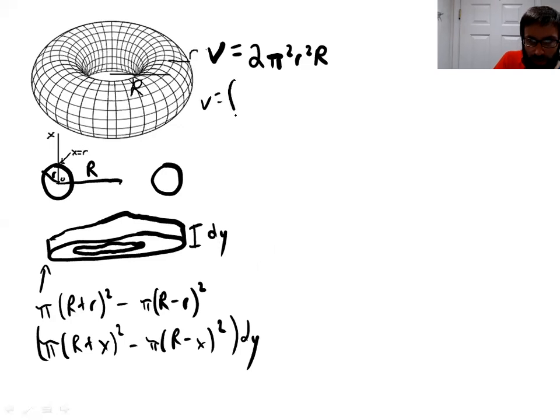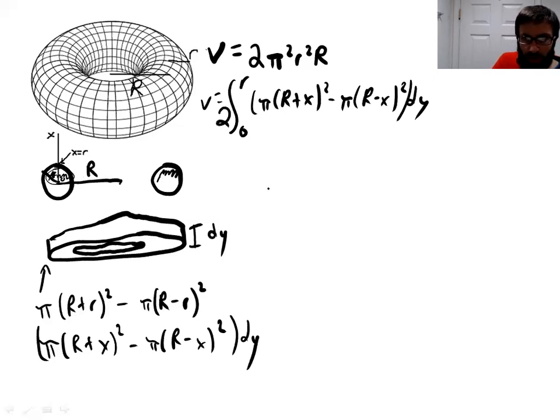Now we can set up an integral where we're going to be going from zero to r. We're going to be adding up all these little pieces in this hemisphere and that hemisphere there. We're just going to enter in that volume. That's π(R + x)² - π(R - x)² times dy. Now that was just one hemisphere - we're also doing this hemisphere at the same time because we're doing R and r. We're expanding that whole area, but it's only a hemisphere. So we need to times this whole volume by two.